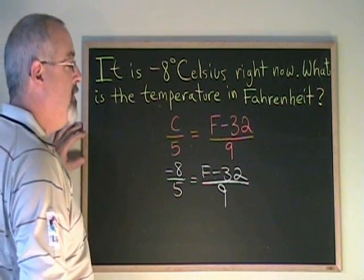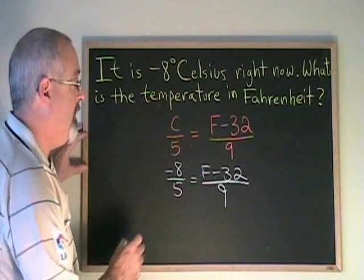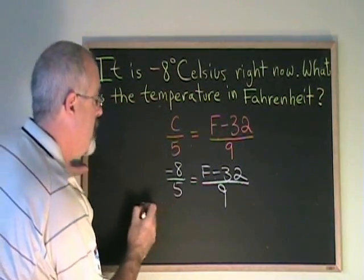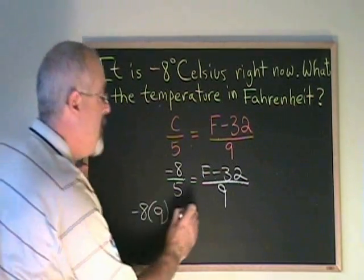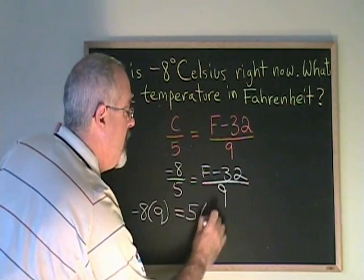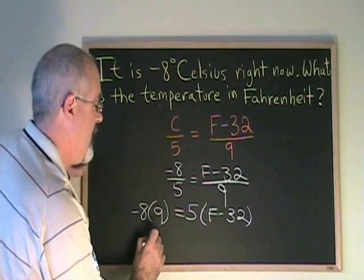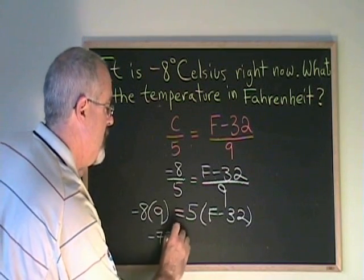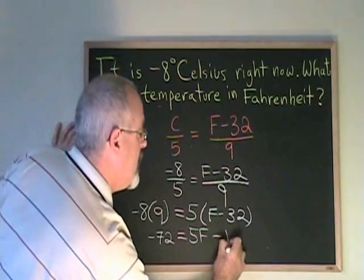I am going to use the fundamental rule of proportions to cross multiply and solve this. Top times bottom gives me negative 8 times 9 equals bottom times top gives me 5 times F minus 32. This becomes negative 72 equals 5F minus 160.